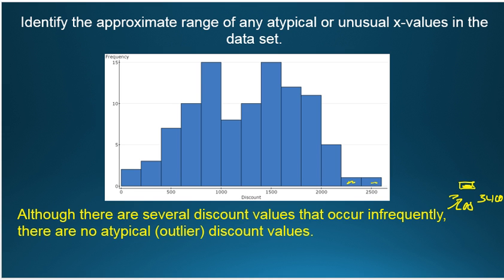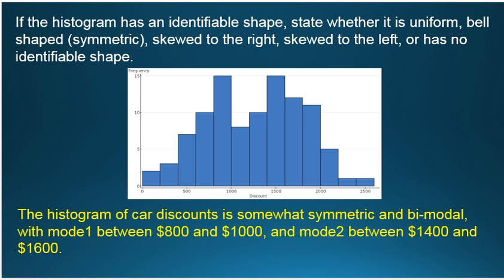Finally, describing the shape of the histogram, again, if the histogram has an identifiable shape, state whether it's uniform, bell-shaped, or so forth, this histogram does appear to be